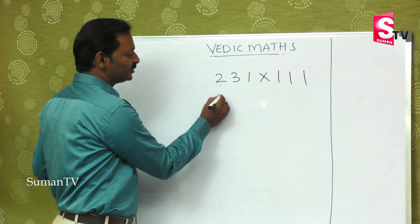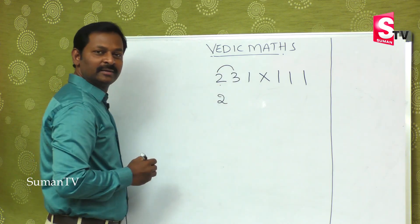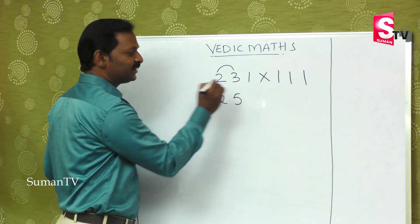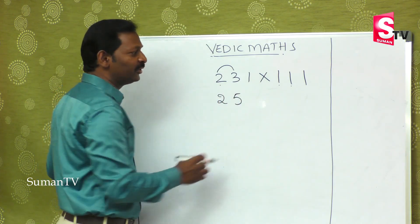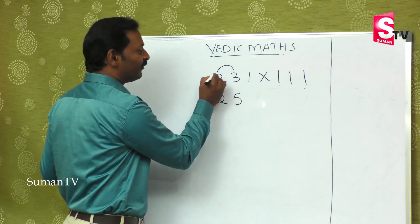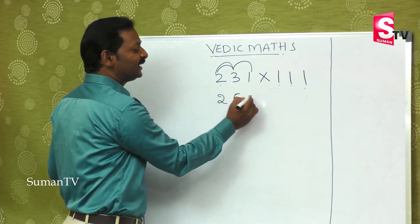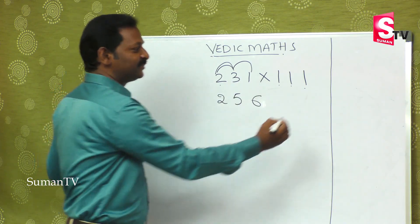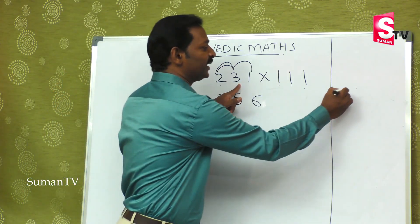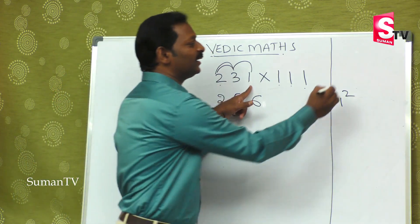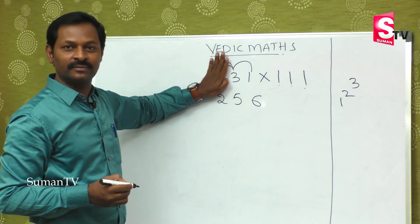The first digit is 2, and the first and second together is 5. We will do this process. Because in the last episode, there are 3 digits, you are going to get 6. The first digit is 1, 2, and 3 — you are going to get 6. How to solve the problem.